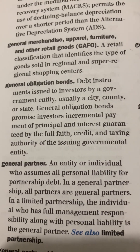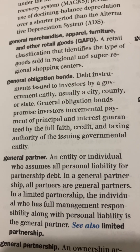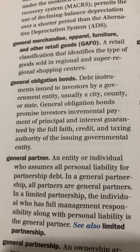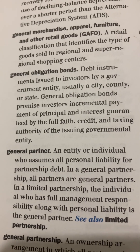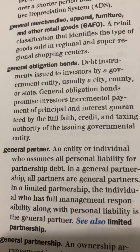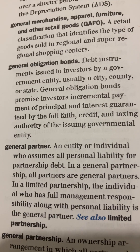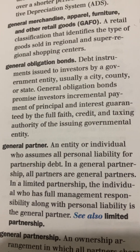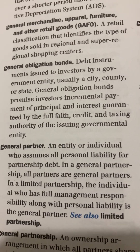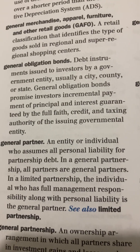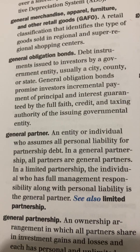General Obligation Bonds: debt instruments issued to investors by a government entity, usually a city, county, or state. General Obligation Bonds promise investors incremental payment of principal and interest guaranteed by the full faith, credit, and taxing authority of the issuing governmental entity.